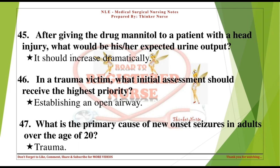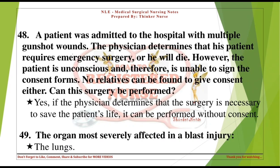What is the primary cause of new-onset seizures in adults over the age of 20? Trauma. A patient with multiple gunshot wounds requires emergency surgery or he will die, but he is unconscious and unable to sign consent forms, and no relatives can be found. Can this surgery be performed? Yes — if the physician determines that surgery is necessary to save the patient's life, it can be performed without consent.